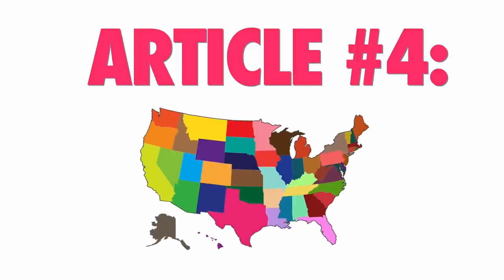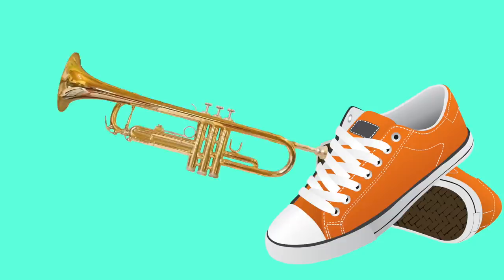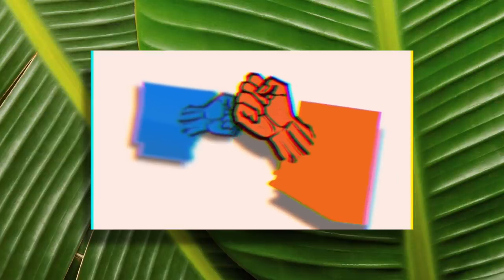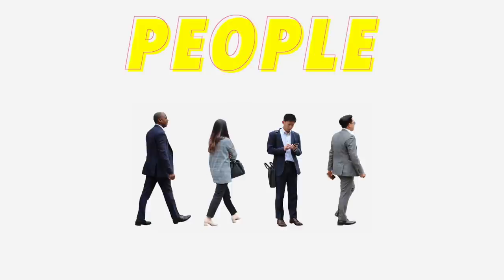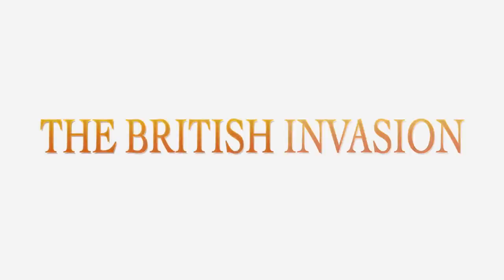Article 4 is all about states. Section 1: all states have to honor the laws of other states. Section 2 guarantees that all citizens are treated equally in court. Section 3 details the control of federal laws and how new states are admitted — just in case there are any new kids in town. Section 4 ensures people a representative democracy and guarantees states protection from invasion. However, the federal government apparently doesn't protect states from the British invasion.